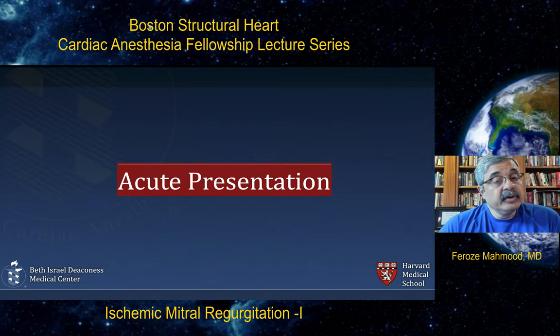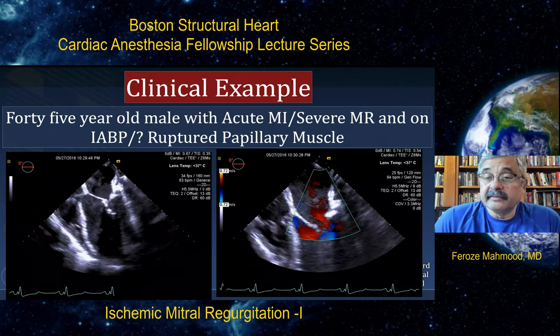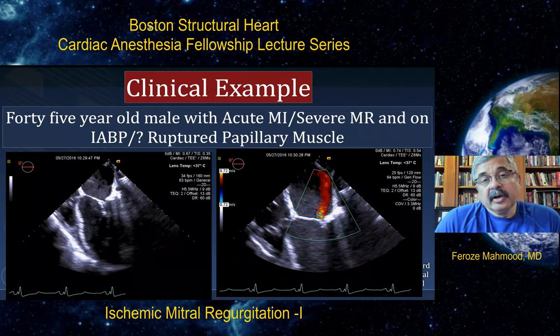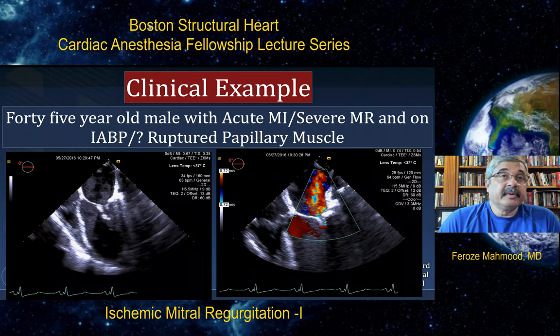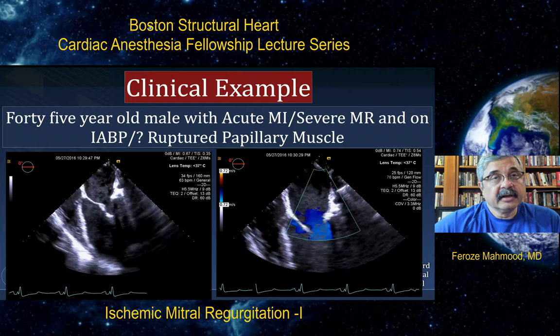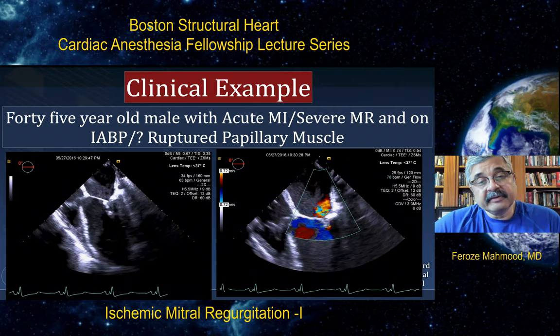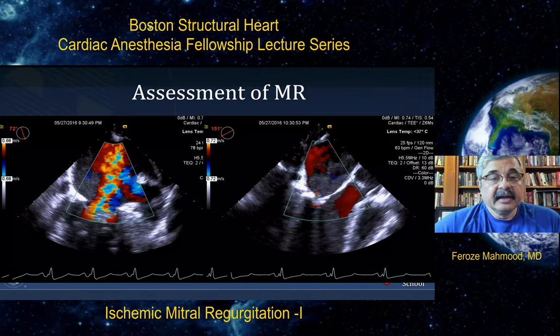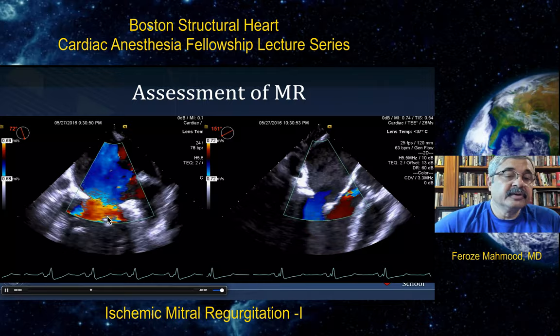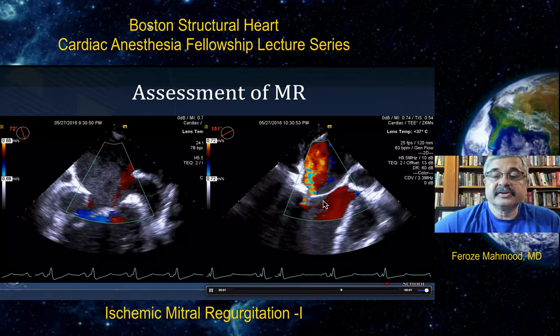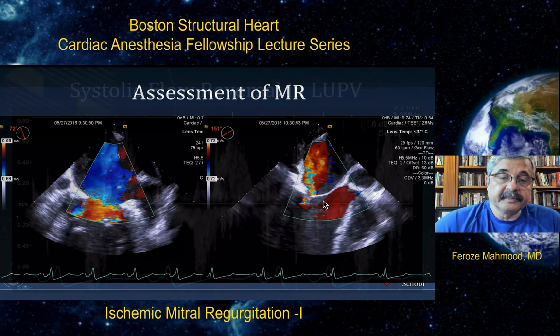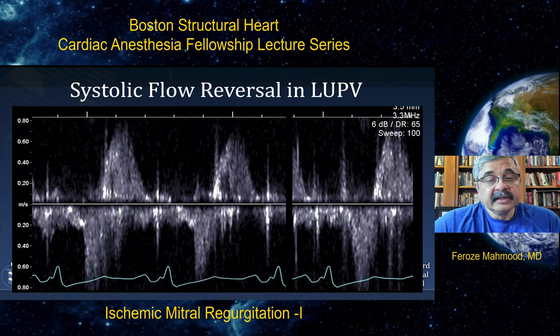Now let's go over an acute presentation. This is a 45-year-old male with acute myocardial infarction, reported to have severe mitral regurgitation. The patient was placed on an intra-aortic balloon pump for hemodynamic support, and there was some suspicion of papillary muscle rupture given the ferocity with which the MR presented. As you can see, it is not necessarily a papillary muscle rupture, but significant tethering of both anterior and posterior leaflets with severely depressed systolic function, leading to significant central mitral regurgitation. Interrogation of the pulmonary venous inflow demonstrates significant flow reversal in the left upper pulmonary vein, implying this is severe mitral regurgitation.